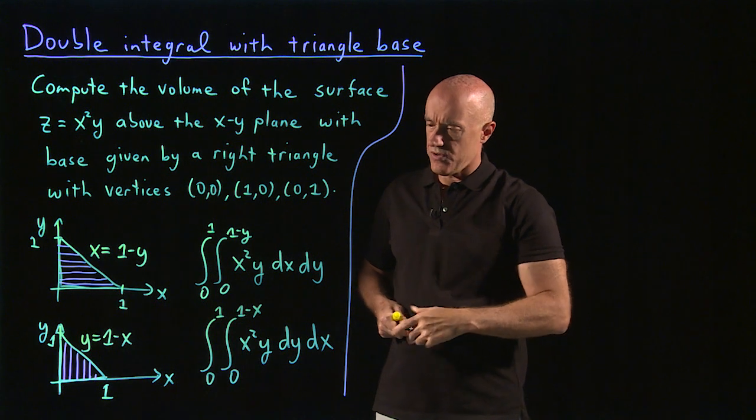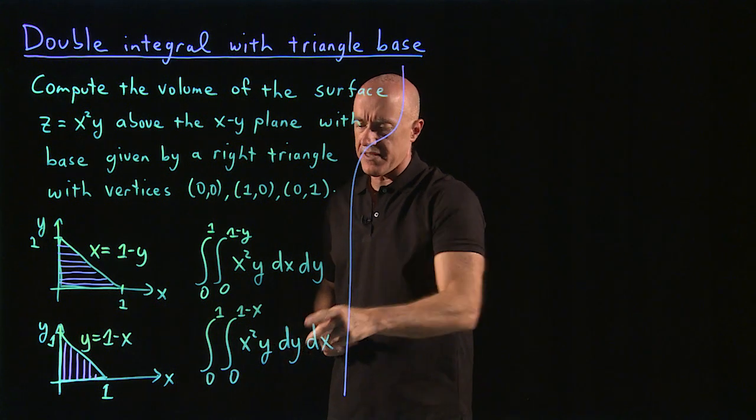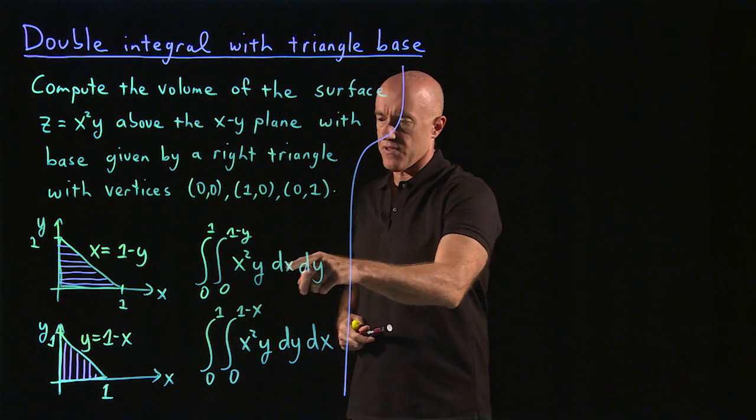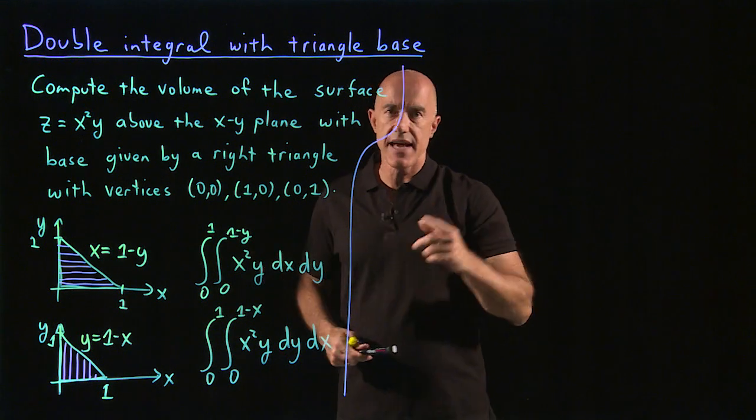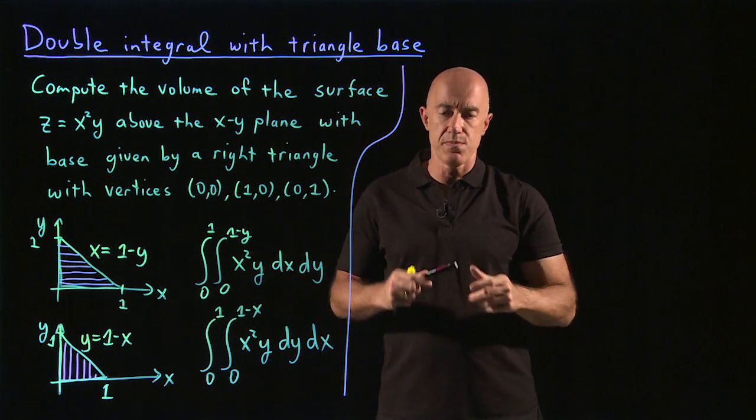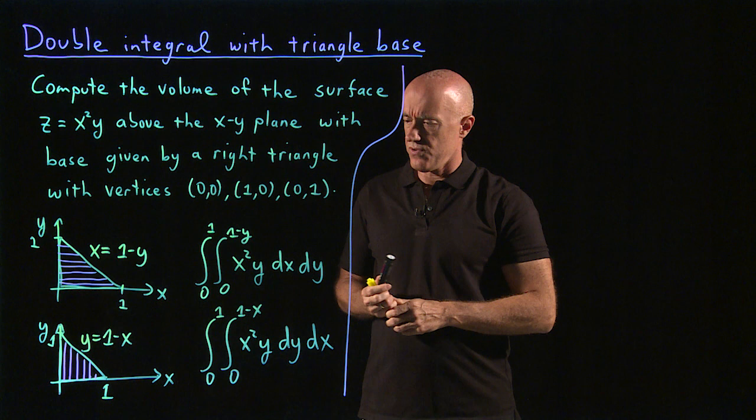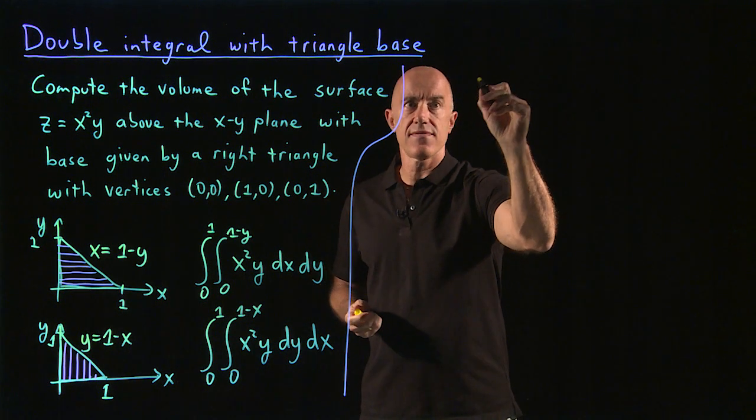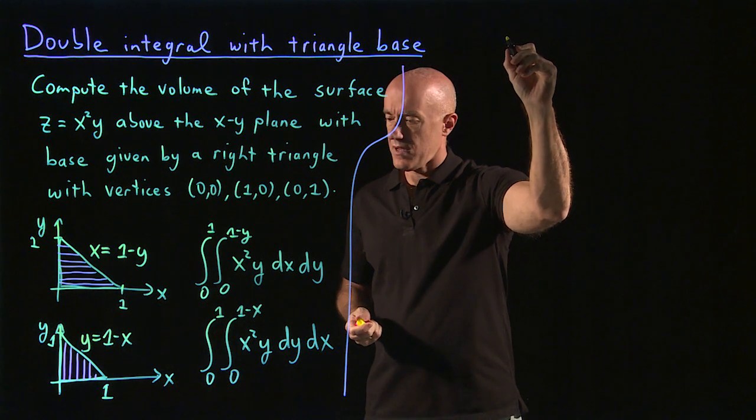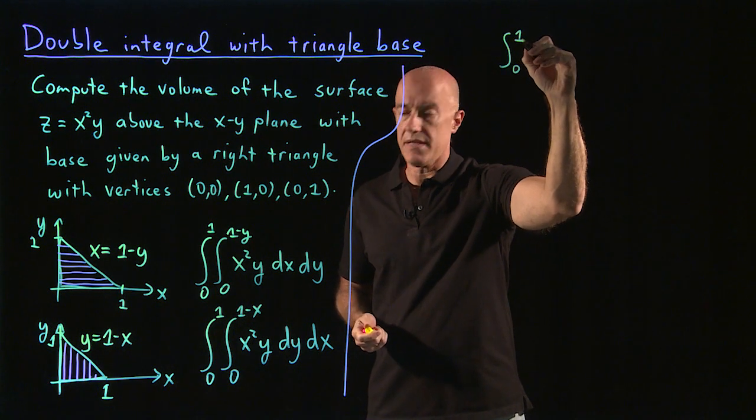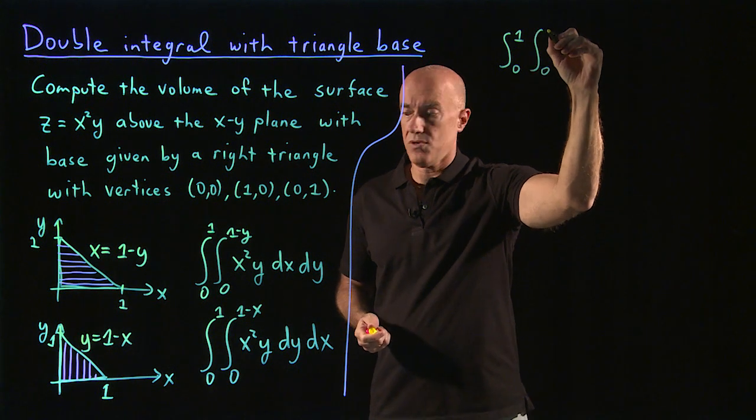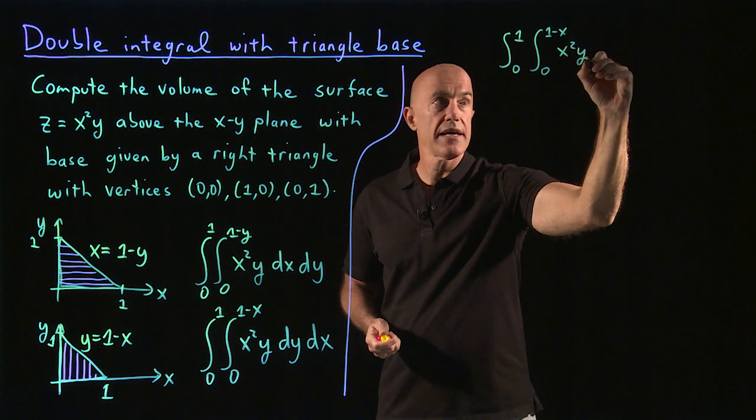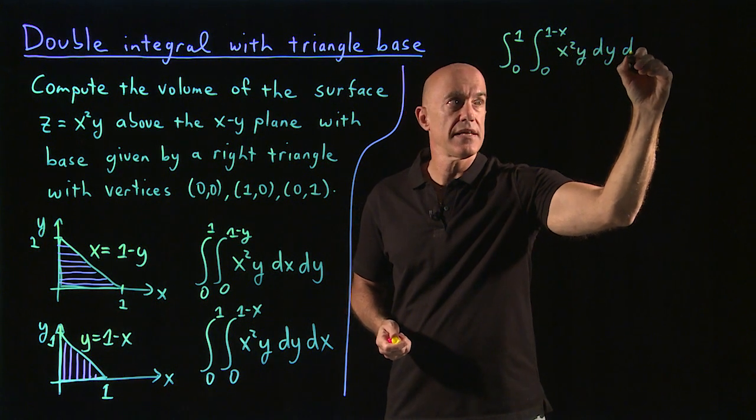So let's choose one of them and do it. I think I want to integrate the second one because then it's a y dy, so it becomes a y squared. If we integrate the first one, we have an x squared dx, we have to deal with an x cubed. So a little bit easier to do the second one, so let's go ahead and do that. So we have the double integral from 0 to 1, 0 to 1 minus x, x squared y dy dx.